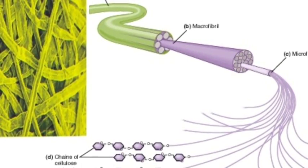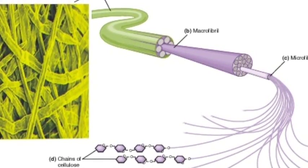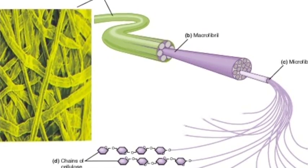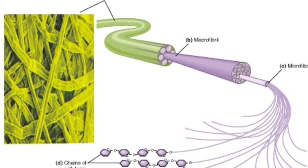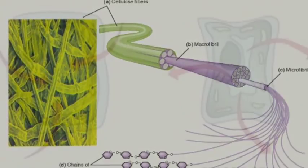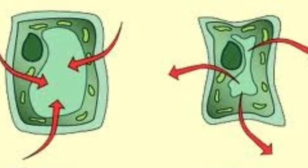These are held together by more hydrogen bonds to form larger bundles called macrofibrils. They are embedded in a polysaccharide glue of pectins to form cell walls. These walls give great strength to each plant cell.